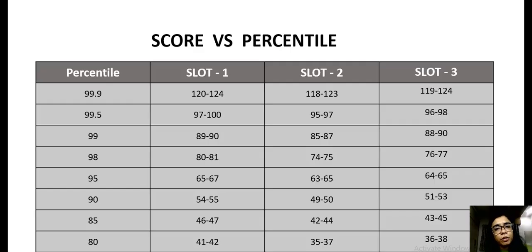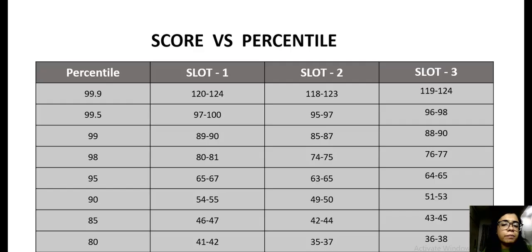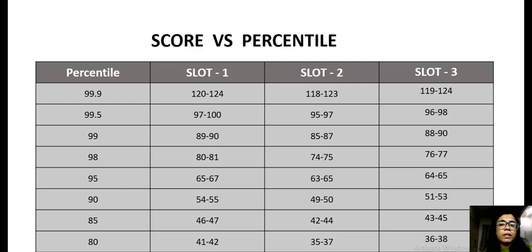Comparing the verbal, DILR, and overall paper review, slot one was easier than slot two and slot three. Slot two, however, was the toughest among all the three slots — it was not very easy, and you had to think quite a bit to solve sets. The quant was at a slightly moderate to difficult level, more difficult compared to slot one. Slot three, however, was between slot one and slot two in terms of difficulty.